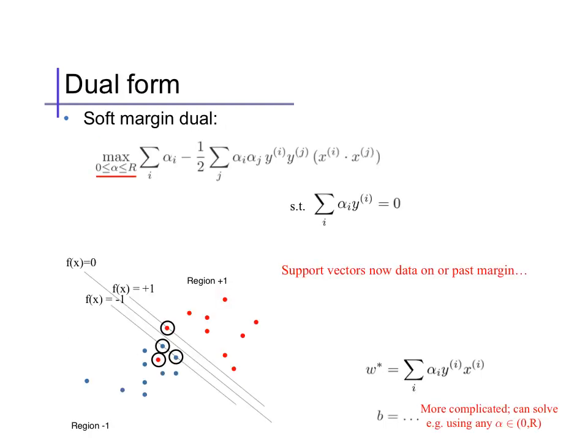If we take the dual of the soft margin quadratic program, we again obtain a quadratic program similar to before over only the Lagrange multipliers alpha, with just one minor modification. The alphas are now bounded from above as well by R. Intuitively, this says that if a data point violates the margin constraint, the Lagrange multiplier alpha_i for that data point will increase until it's at most R times the violated distance, i.e. R times epsilon. Complementary slackness now tells us that the alphas are non-zero only on data that are either at the margin or on the wrong side. In other words, for positive data say, any points where the linear response is less than or equal to plus one.